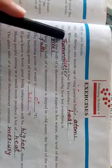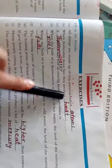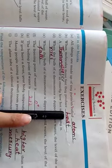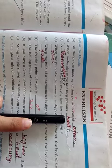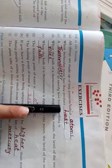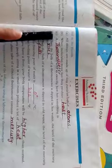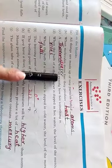When molecules move fast they produce heat. A thermometer tells us exactly how hot something is.